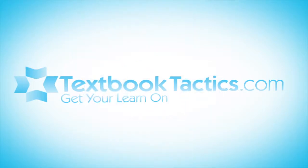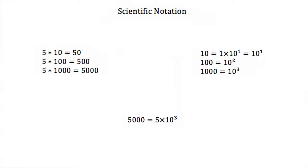This is a tutorial on scientific notation. We know that 5 times 10 is 50, 5 times 100 is 500, and 5 times 1000 is 5000.